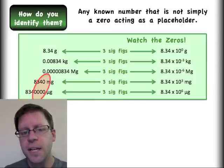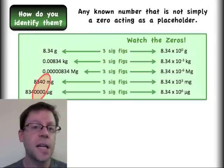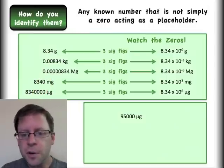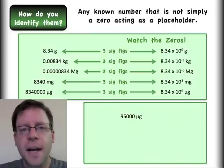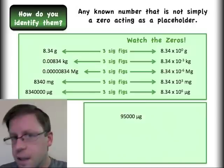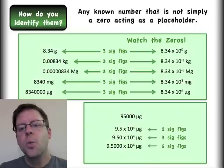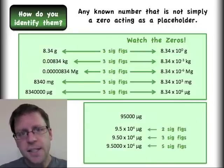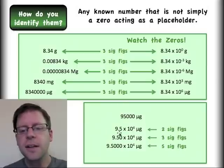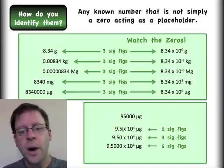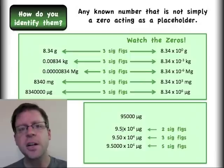But this does bring up an issue about these particular zeros. It can be very confusing. Let's start over with this nice fresh number here, 95,000 micrograms. How many significant figures are there in this number? It's not particularly clear. What somebody should do in an event like this is they should report the number in scientific notation. You can see here that I'm very clearly identifying that this is only two sig figs. Whereas if I actually know that the next digit over is a zero as opposed to some other number, I can write it like that.